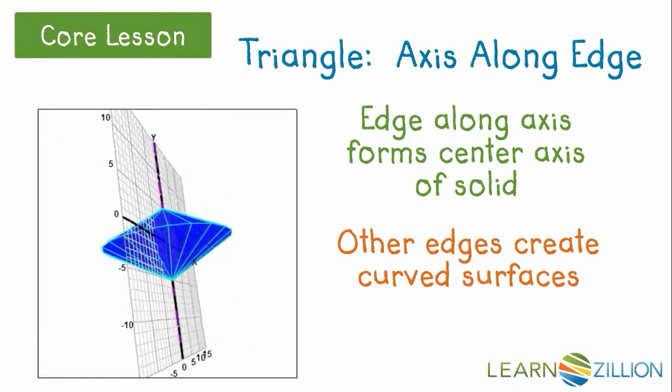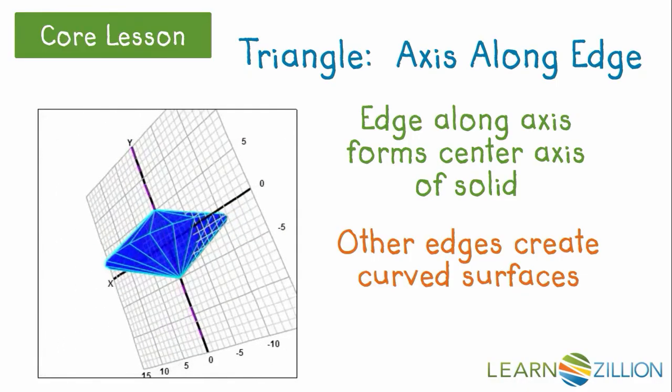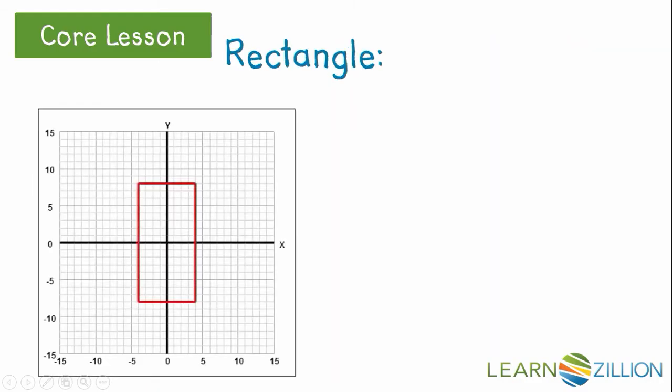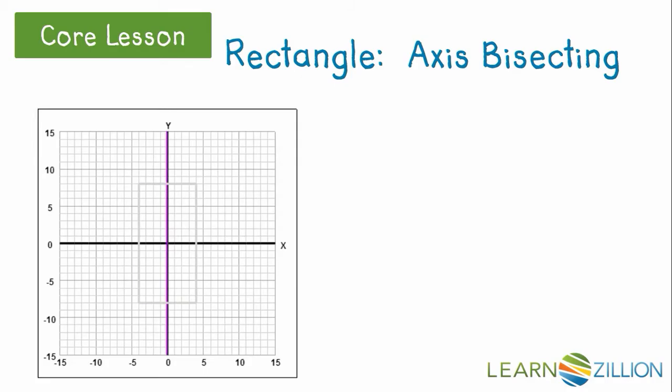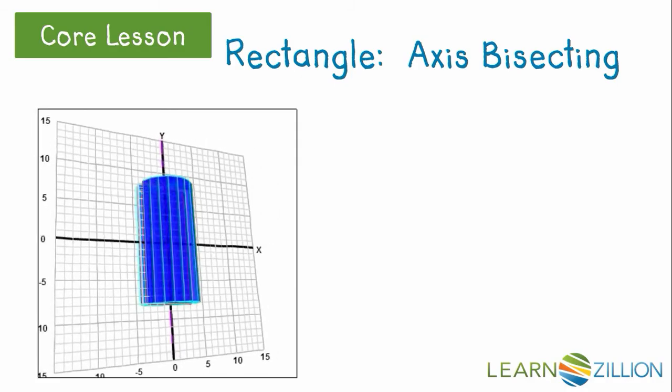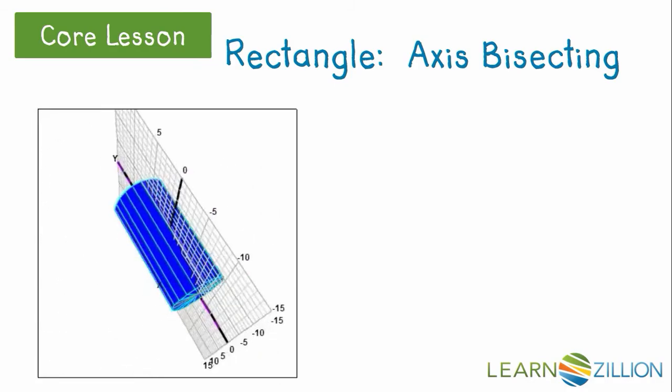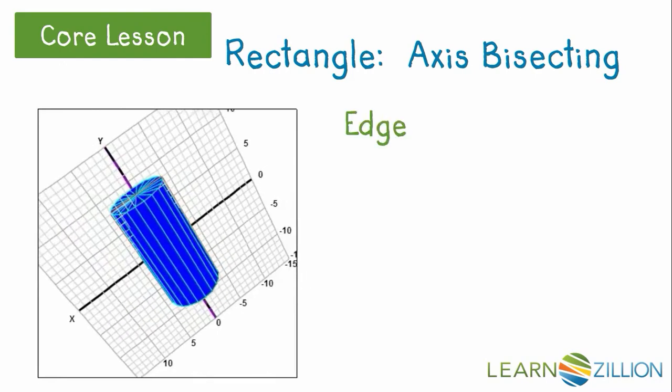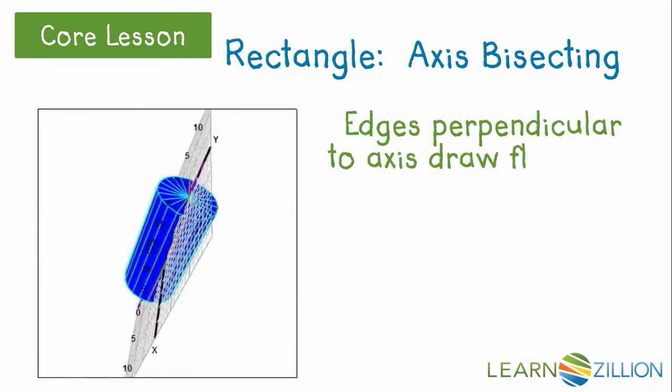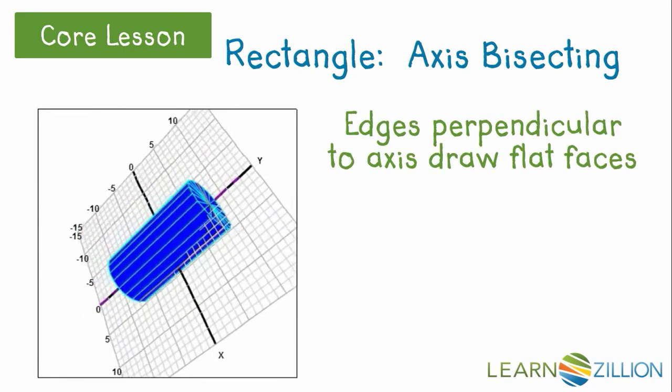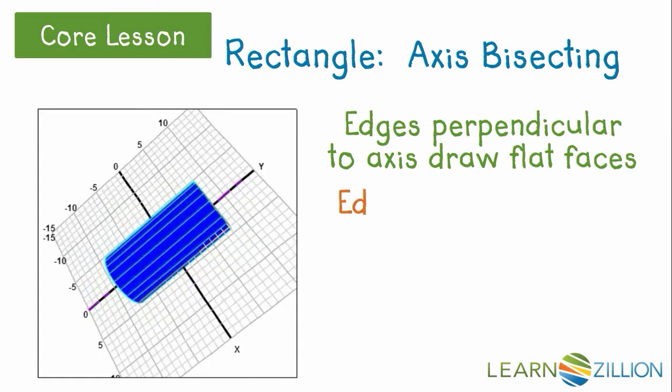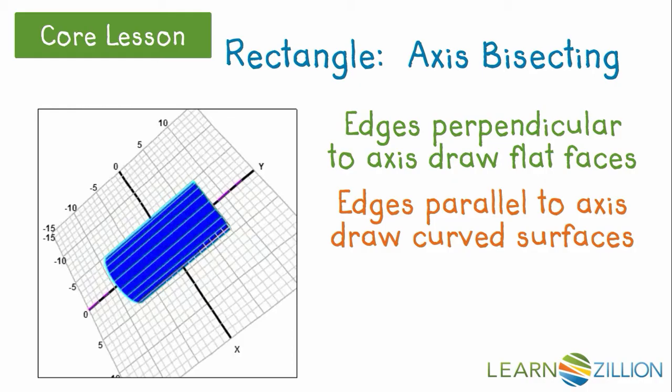Let's try this with a rectangle. Watch this rectangle rotate, and pay attention to what surfaces are created. Do you notice what's happening? The edges that were perpendicular to the axis of rotation rotated, drawing out flat surfaces. The edges that were parallel to the axis drew curved surfaces. This rotation created a cylinder.